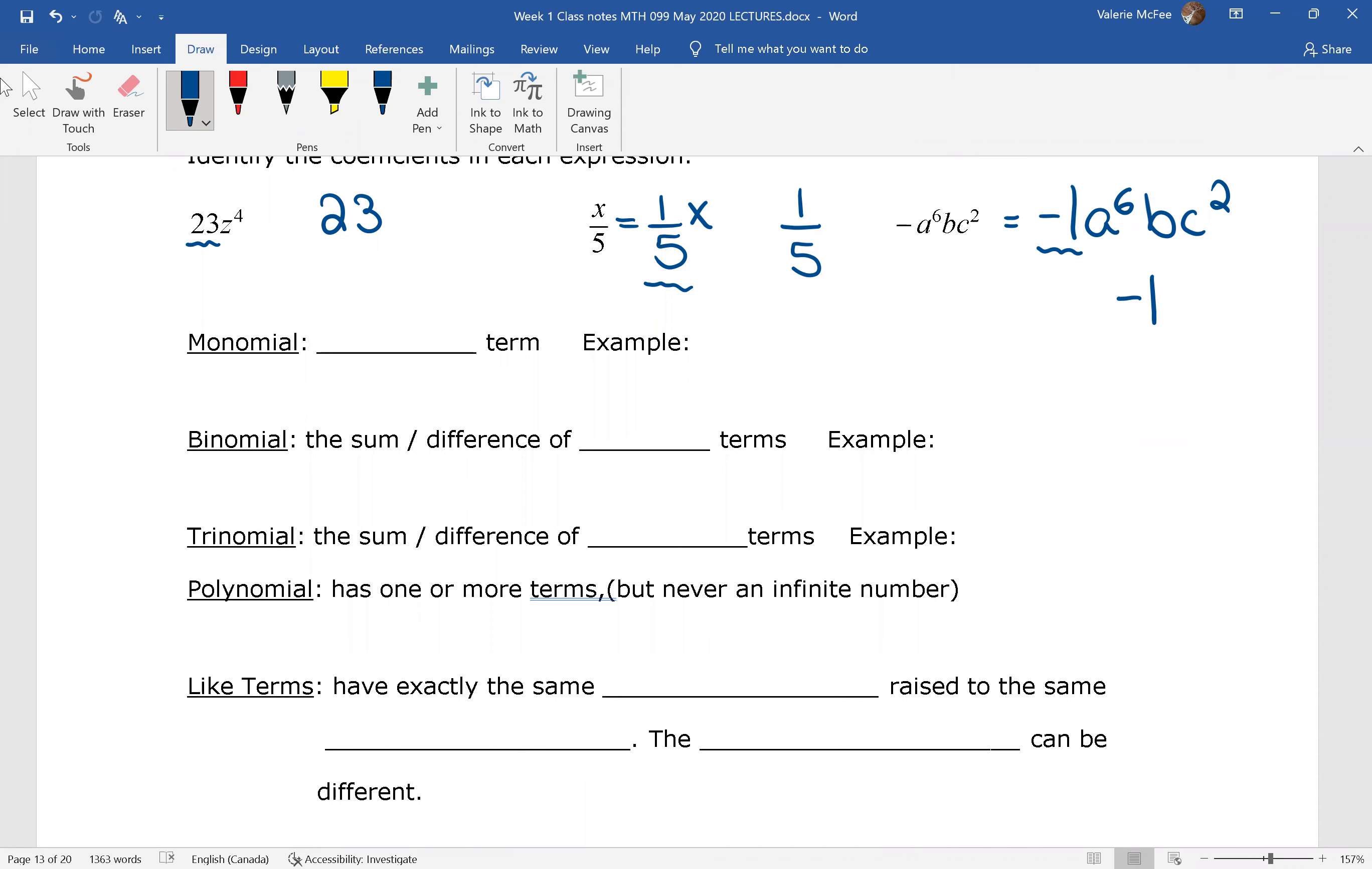If we're talking about a monomial, we are talking about one term. So for example, 3x cubed y. Remember, a term is the multiplication, the product of a number and variables. A binomial is the sum or difference of two terms. So for example, 3x cubed y minus 4x squared. Now we have two terms we are subtracting. A trinomial, what do you think? It's the sum or difference of three terms. So we can take our binomial and just add or subtract another term. A polynomial is the word we use when we're talking about monomials, binomials, trinomials, or even those expressions that have more than three terms. But it's not an infinite number. We can always count the number of terms.